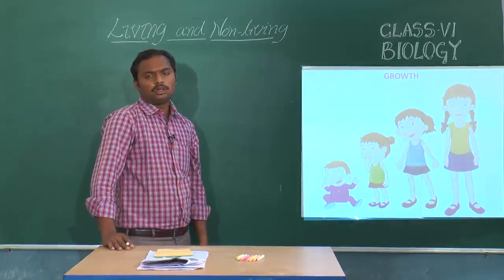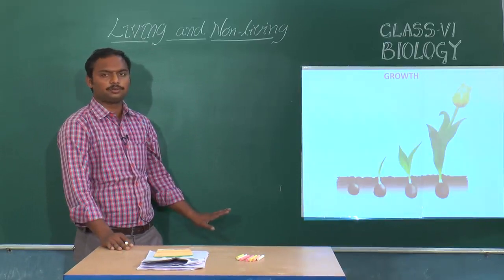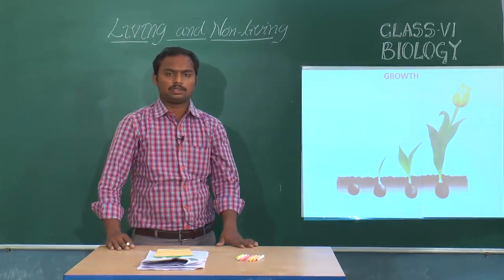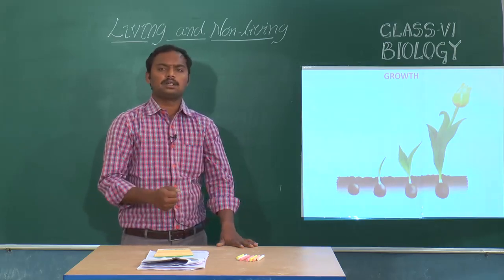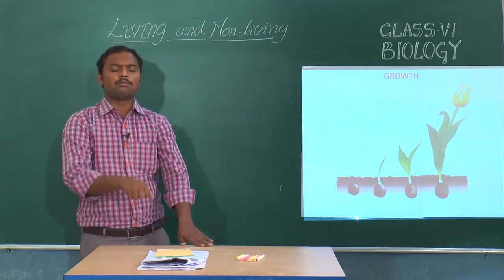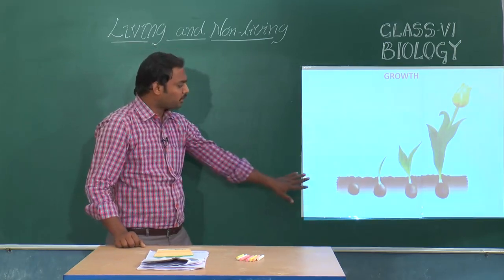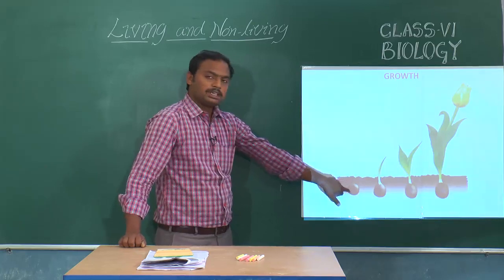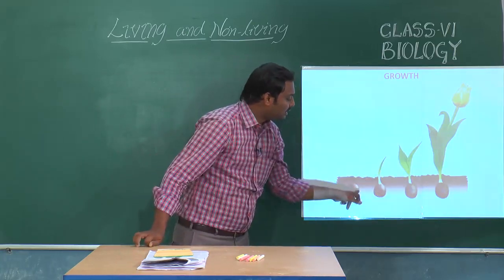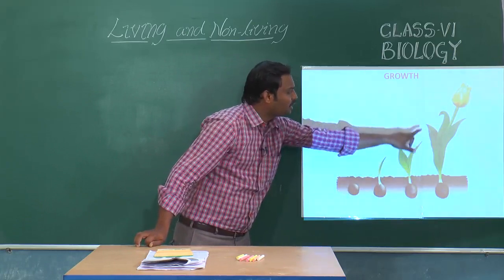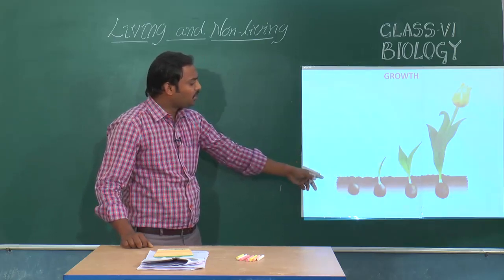To observe the growth in plants and how it is taking place, we can perform an activity. Take a small quantity of bean seeds and soak them in water. After two to three days, you can observe the seeds which are sown in soil — they will grow and germinate and develop as a plant, as you have seen in the picture.